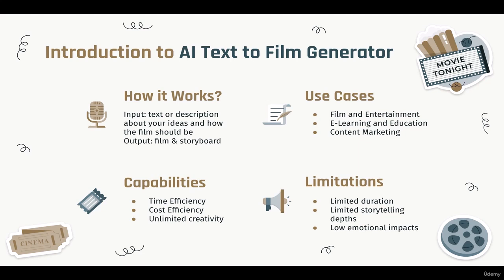The third limitation is low emotional impact: generating authentic emotional resonance in AI-generated films can be quite challenging. The technology may struggle to capture subtle human emotions, making it less effective at evoking strong emotional responses from viewers. These limitations can affect the overall impact of the content. Just a quick reminder: AI is not human and will never be human, so it's not realistic to expect AI to have human-like emotions.